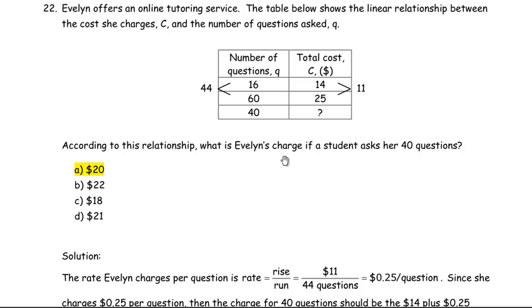C is the cost and Q is the number of questions she helps students with. According to this relationship, what is Evelyn's charge if a student asks her 40 questions? Notice the question mark by the 40 here. We're given that 16 questions cost $14 and 60 will cost $25.